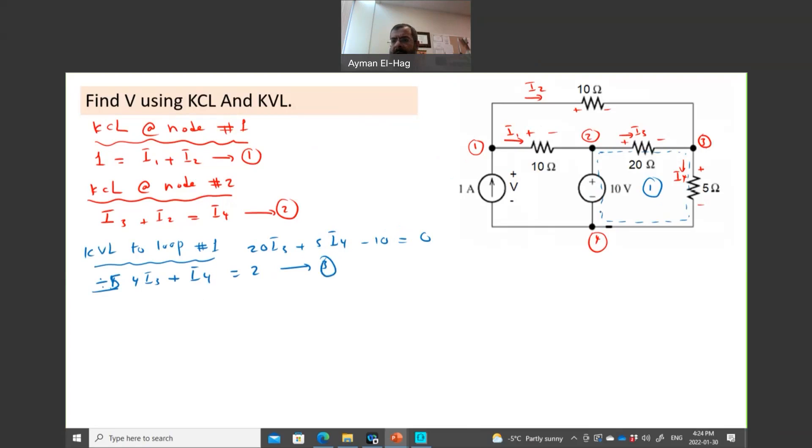So we will have 4I3 plus I4 equal to 2, and this is my third equation. Then I could take this loop or this loop. We have two more loops. I can use one of them. I will call this loop number two.